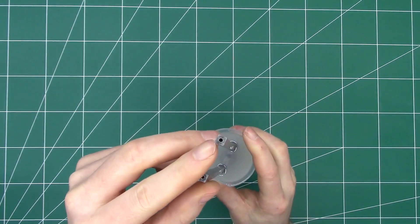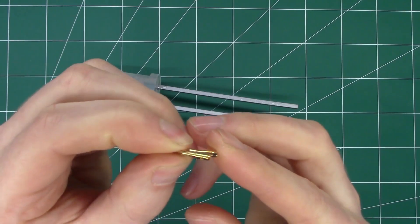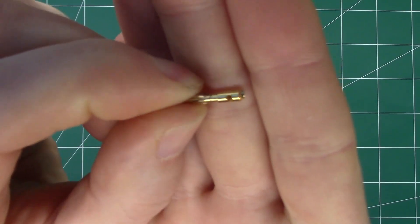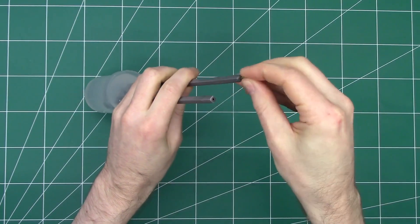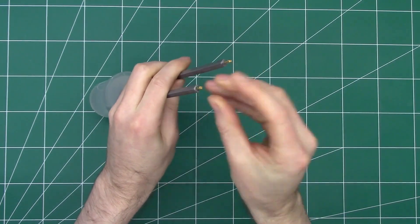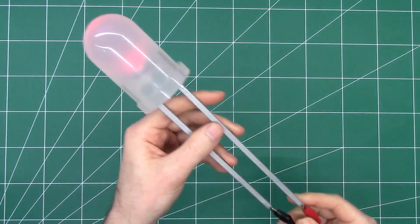In the legs there's a two millimeter banana plug connector and included with the giant LED are two male banana plug connectors. These can just be pushed in and then using something like crocodile clips you can power the LED.